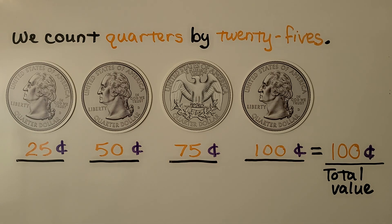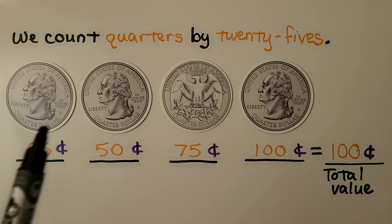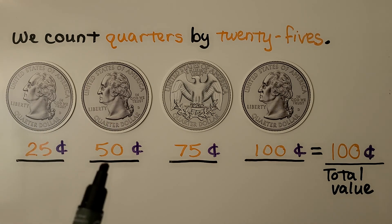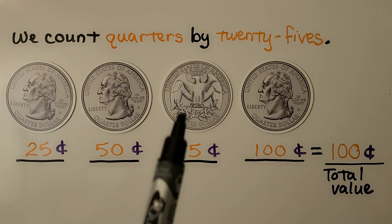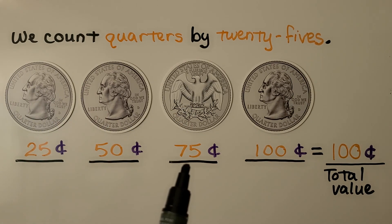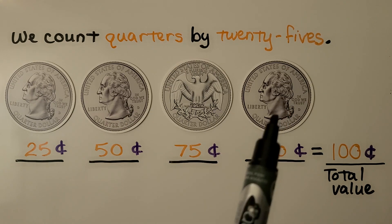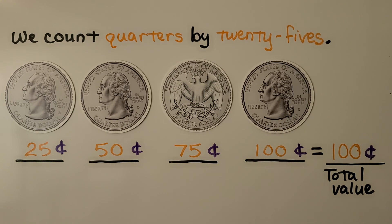We count quarters by 25s. One quarter is equal to 25 cents. Two quarters is 50 cents. Three quarters is 75 cents. And four quarters is 100 cents — that would be 100 cents for the total value of four quarters.